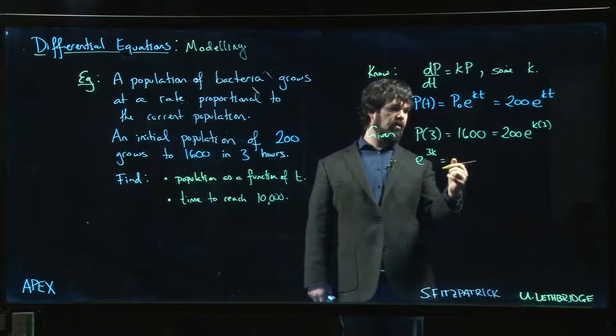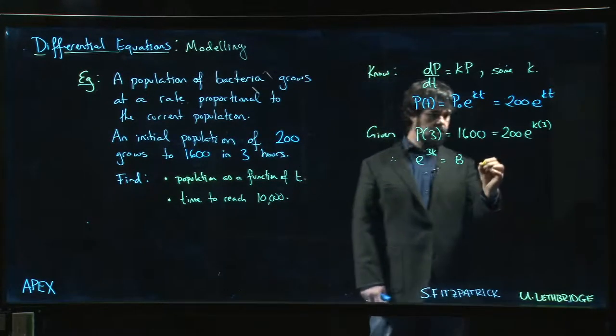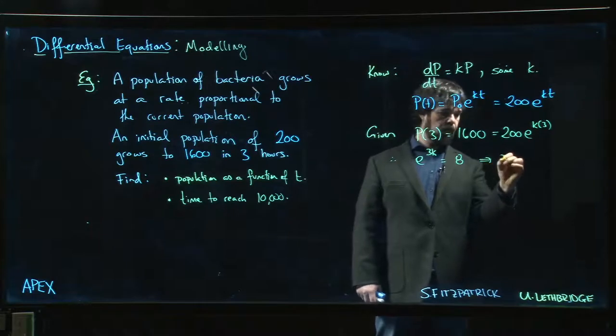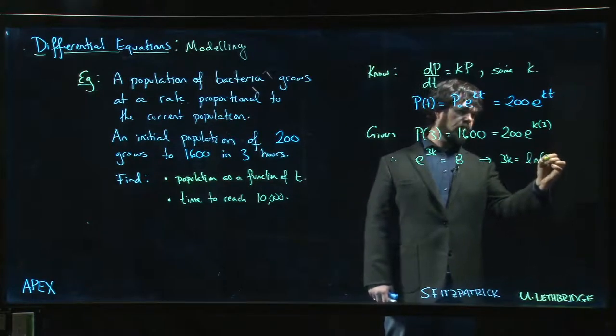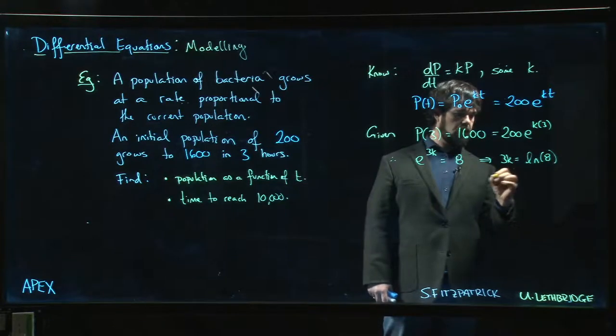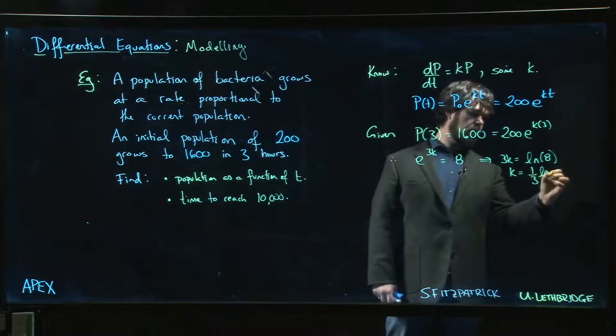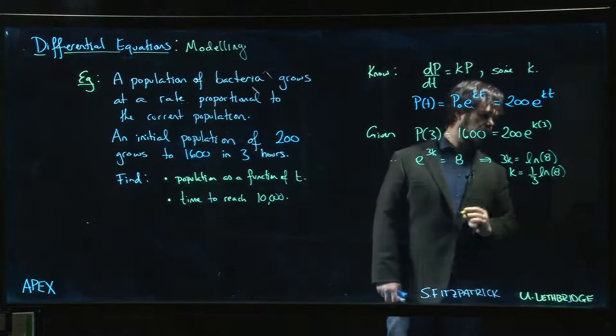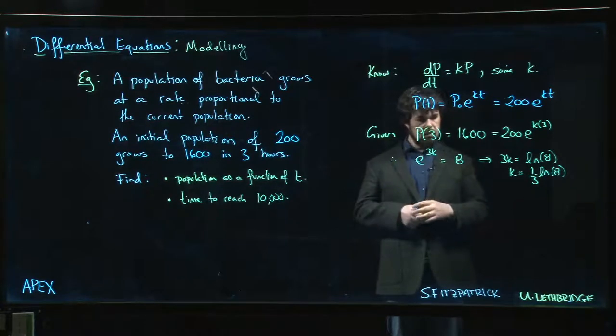Take the log of both sides. 3k is equal to the natural log of 8, so that means that k is one third times the natural log of 8.